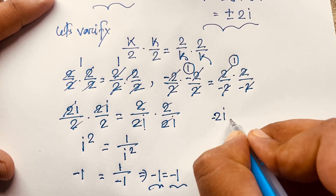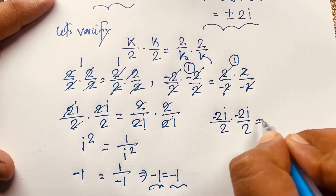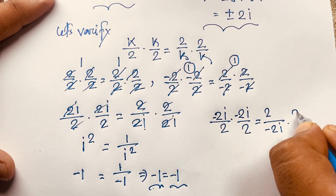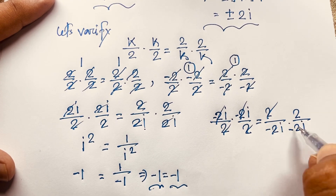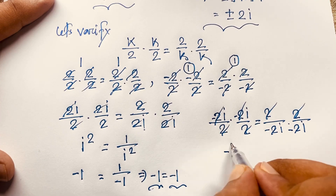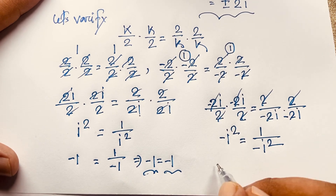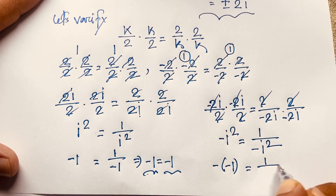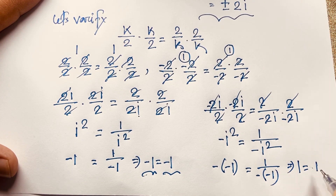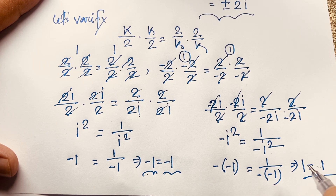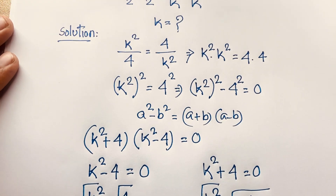For k equals negative 2i: we get negative 2i over 2 times negative 2i over 2 equals 2 over negative 2i times 2 over negative 2i. These cancel and we get negative i squared equals 1 over negative i squared. That gives negative 1 on the left and 1 over negative negative 1 which is also 1, so both sides equal 1. Left hand side equals right hand side. Thank you all — if you enjoyed this video, please subscribe to my channel for more interesting videos. Goodbye, take care.